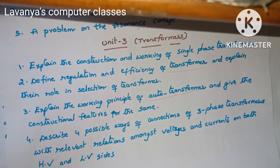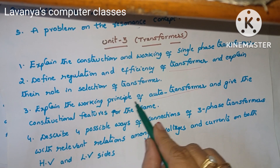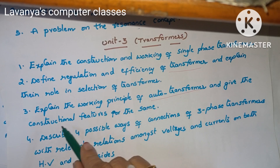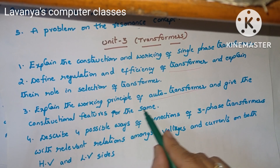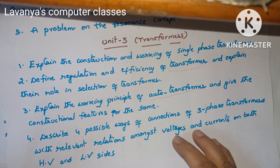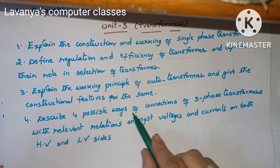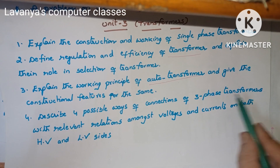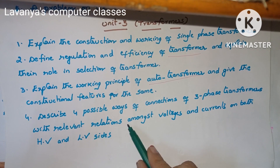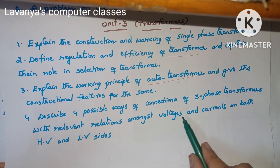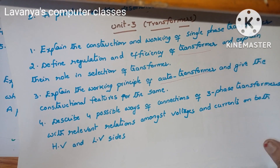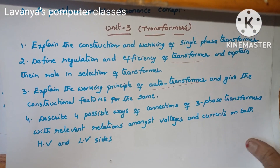Next important question is: explain the working principle of an auto transformer and give the constructional features for the same. Next, describe four possible ways of connections of three phase transformers with relevant relations among the voltages and currents on both HV and LV sides.